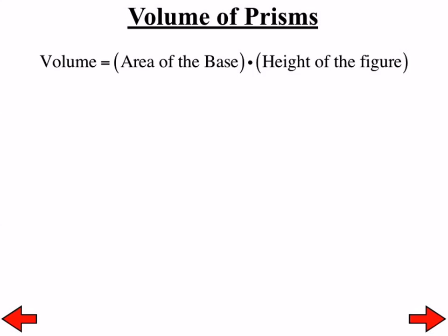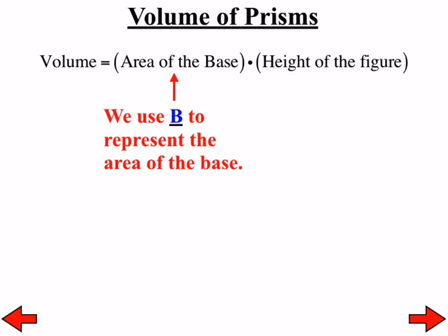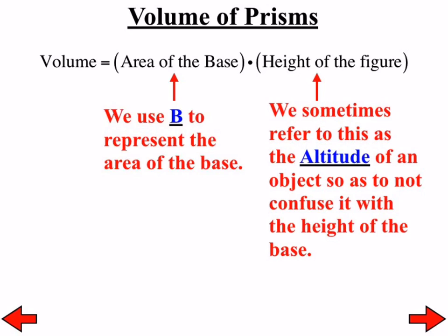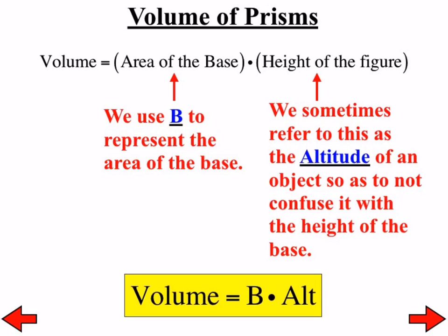Volume of prisms—write that down. Volume is equal to the area of the base, whatever that base shape happens to be, times the height of that figure. We use the capital B to represent the area of any base, and we use the word 'altitude' to represent the height of a figure, so as not to confuse it with the height of the base itself. Generally, the formula to find the volume of any prism or cylinder is: Volume equals the area of the base times the altitude.